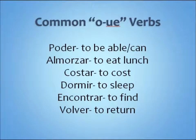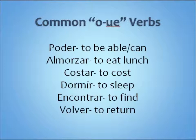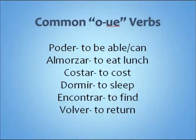Just like e to ie stem changers, there's no way to look at a verb and tell if it's a stem changer — it's something that must be memorized. So these are common o to ue stem changer verbs you need to memorize for this chapter: poder is to be able, almorzar is to eat lunch, costar is to cost, dormir is to sleep, encontrar is to find, volver is to return. These are also on your vocab list, so you need to know what they mean. By our semester exam, you need to be able to look at these verbs and recognize them as o to ue stem changers.